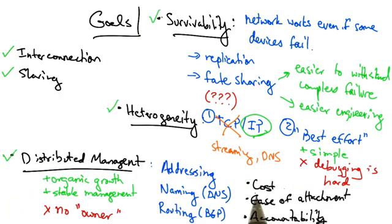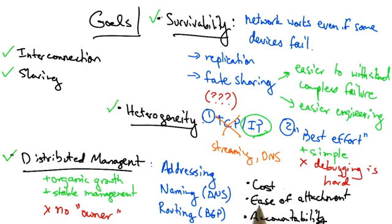The other three design goals that Clark discusses are cost effectiveness, ease of attachment, and accountability. It's reasonable to argue that the network design is fairly cost effective as is, and current trends are aiming to exploit redundancy even more. For example, we will learn about content distributions and distributed web caches that aim to achieve better cost effectiveness for distributing content to users.